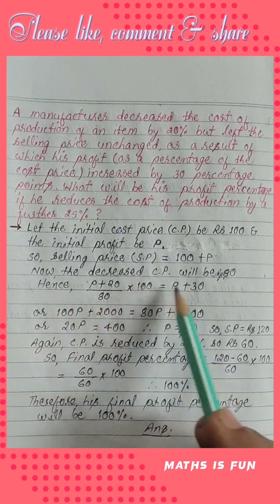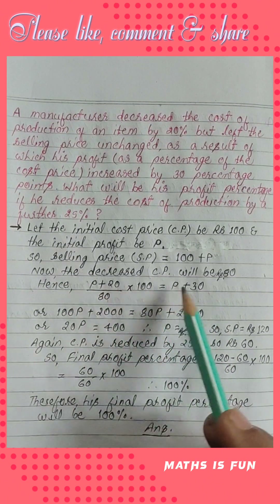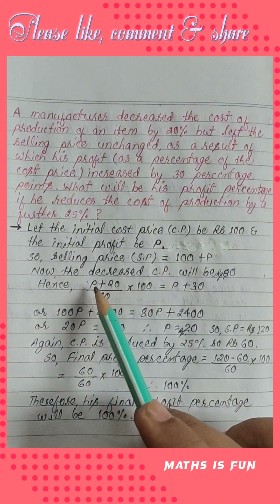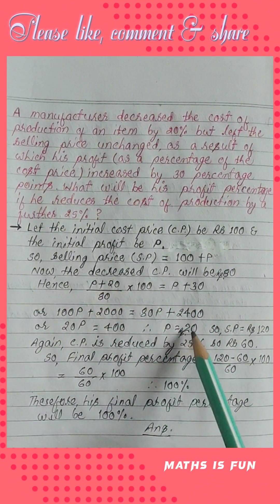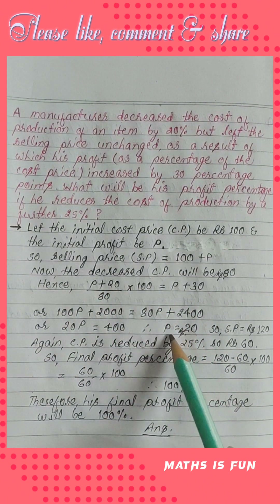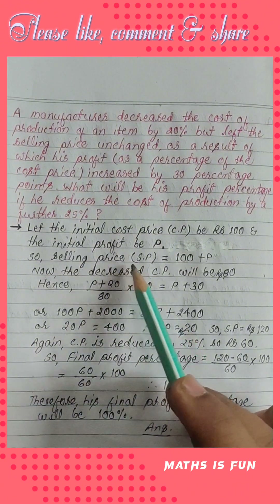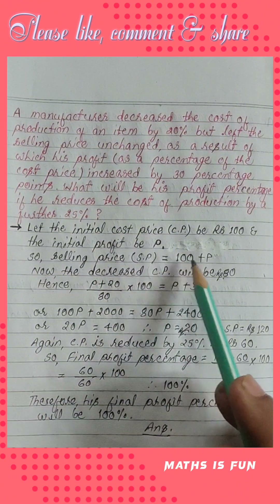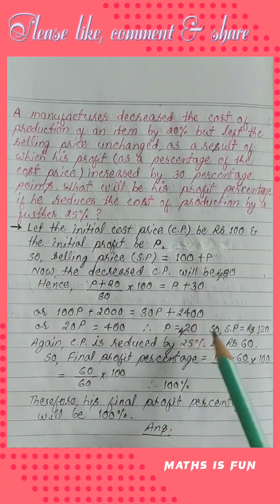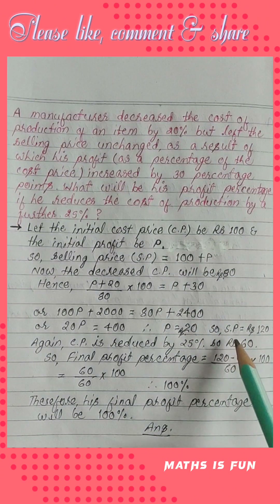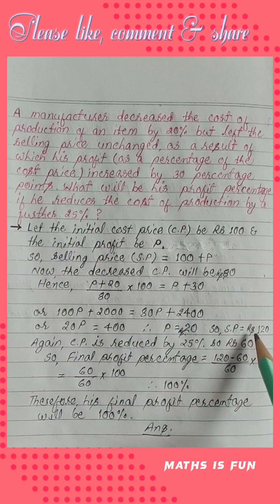Profit over cost price gives his profit percentage as P plus 30. We can equate both expressions and when we solve them we get P equals Rs 20. So if P is Rs 20, the manufacturer's selling price will be 100 plus 20, that is Rs 120.